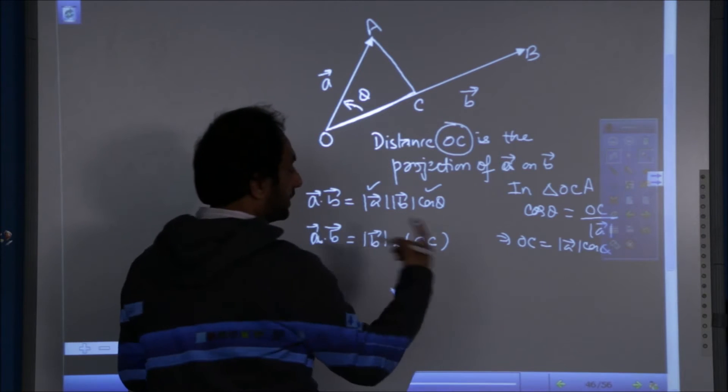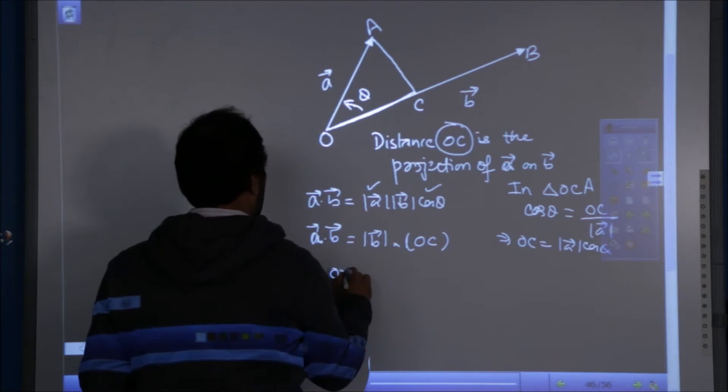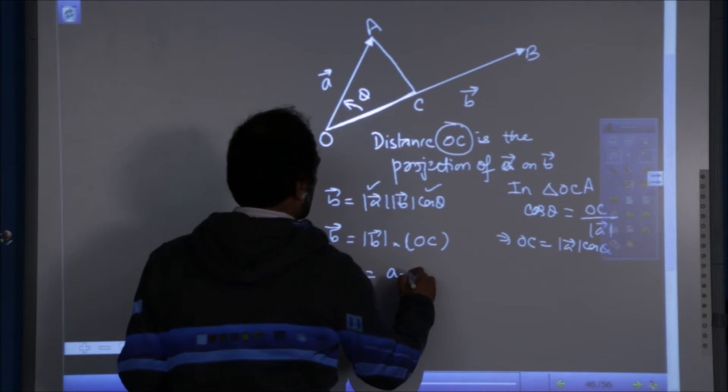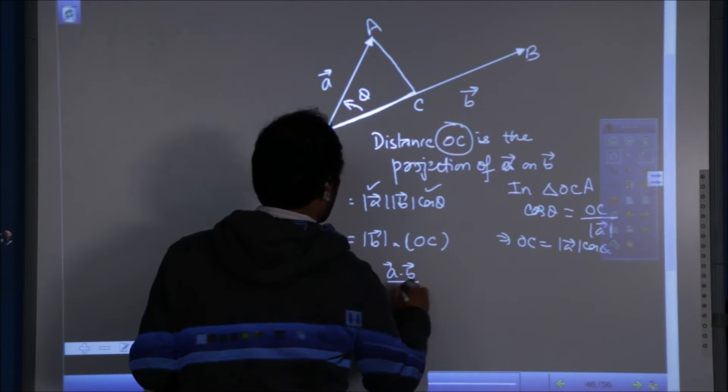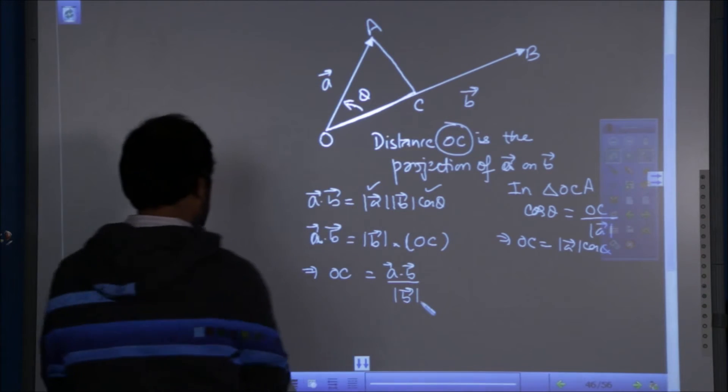And what is OC? The projection. So what is OC? A dot B over mod B. This is the expression for the projection.